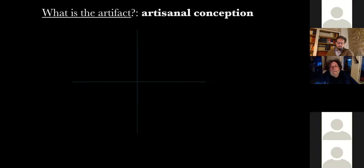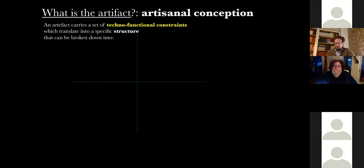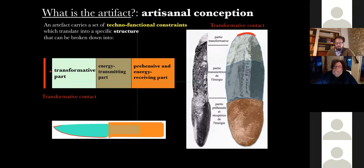Now the question is about the materiality of the artifact. In fact, the question is: what is the artifact? And for that, we have two ways. The first way is the artisanal conception. An artifact carries a set of techno-functional constraints which translate into a specific structure that can be broken down into different parts. It's very simple. We have the prehensive part and energy-reserved part. We have the transmitting part. We have the transformative part. And we have also the transformative contact.